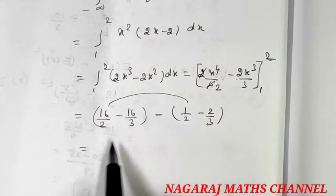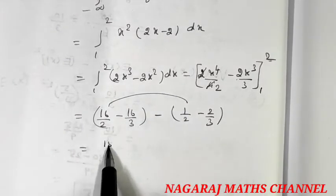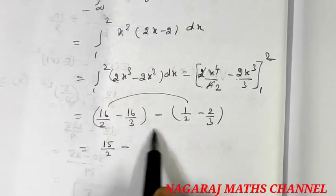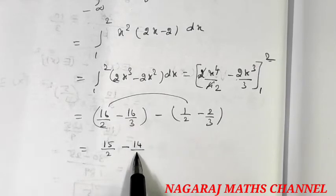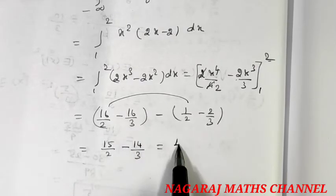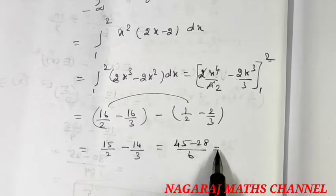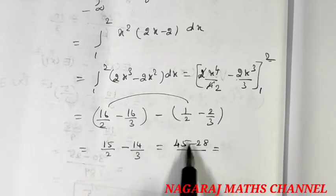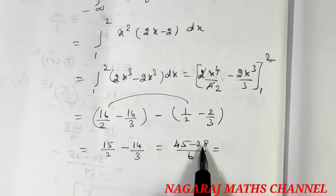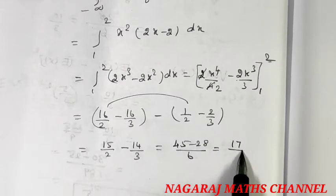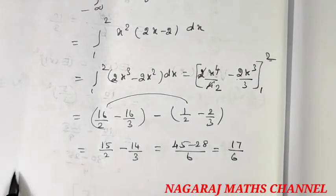So it is: 15 divided by 2, minus 14 divided by 3. Computing: 45 minus 28, divided by 6. So 45 minus 28 divided by 6, which gives 17 divided by 6.